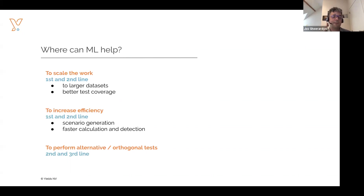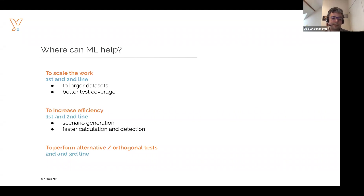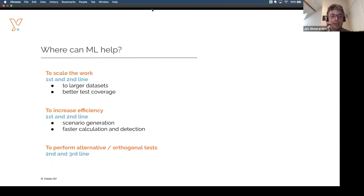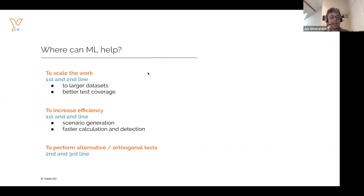The third area where we see lots of use cases across the industry is to perform what we would call orthogonal types of tests. For instance, for an audit team who would like to devise some additional tests on top of an existing model validation process, it's interesting to be able to use other types of tests that would not be available yet compared to more classical statistical tests.